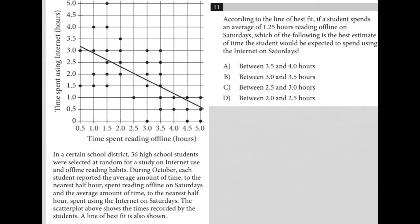So this question says, according to the line of best fit, which we see here, if a student spends an average of 1.25 hours reading offline, 1.25 would be like this vertical line here, right in between 1 and 1.5.